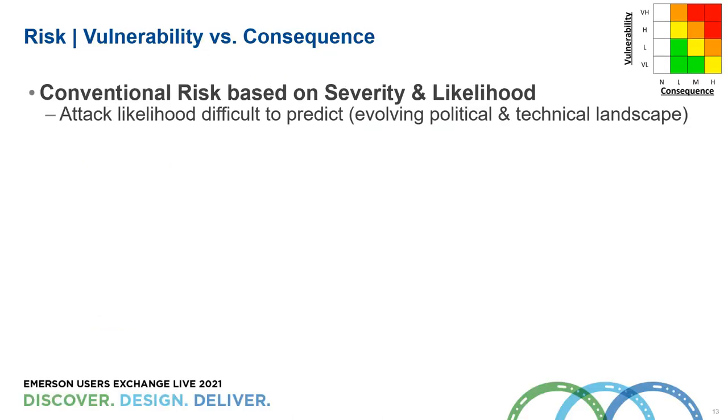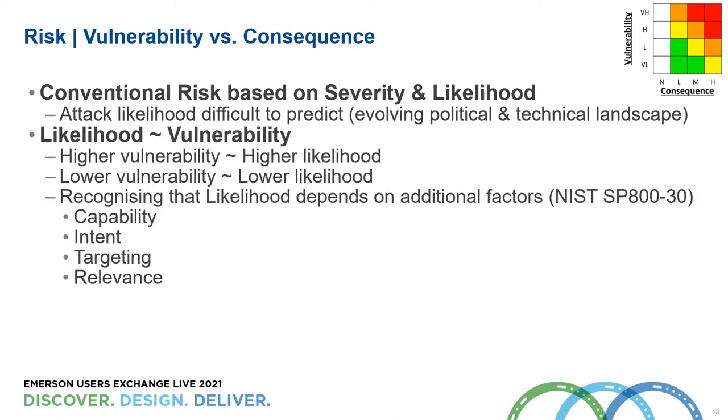We take a simple approach of combining the consequence and the vulnerability. The conventional approach to risk is severity and likelihood. The severity we can take from the physical hazards, but the likelihood is difficult to predict because technology is changing, the political and social environment is changing. We've flipped this on its head and said let's say likelihood is proportionate to vulnerability. The more vulnerable you are, the weaker your controls, then you could infer you've got a higher likelihood of attack.